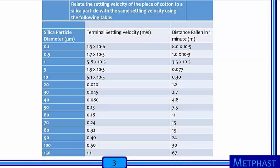After the settling velocity has been calculated, learners can then relate the settling velocity of the piece of cotton to a silica particle with the same settling velocity using the following table. With our cotton settling velocity of 0.50 meters per second from the last step, we can go down the column titled Terminal Settling Velocity and find 0.50 meters per second, which corresponds to a silica particle diameter of 100 micrometers.